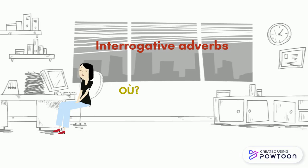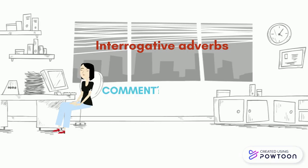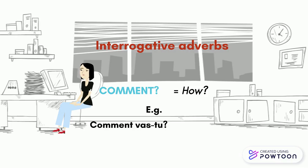Où? (with a grave accent) — Where? For instance, Où habitez-vous? — Where do you live? Comment? — How? For example, Comment vas-tu? — How are you?